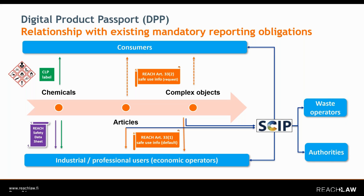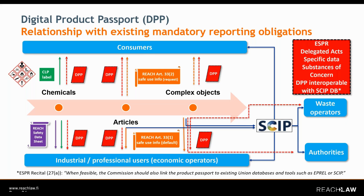The SCIP database is a requirement now existing in place to be complied with by article suppliers, and it will not go away anytime soon — at least not because of the ESPR. The DPP can be considered for the time being as a complementary tool, to be introduced for regulated products subject to delegated acts, which will then set out specific information requirements, including also for substances of concern.